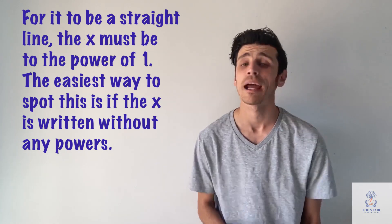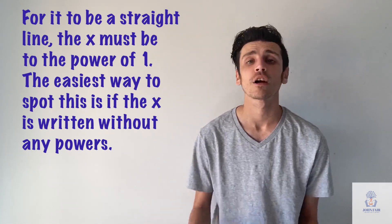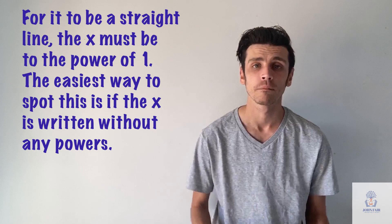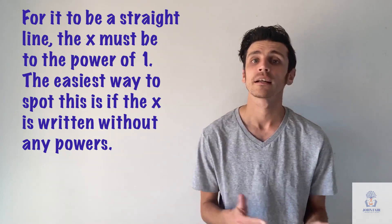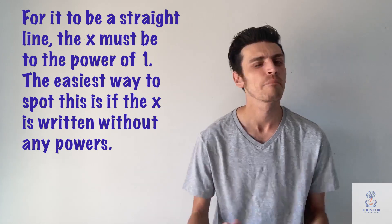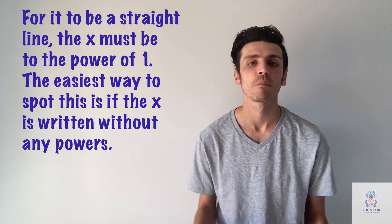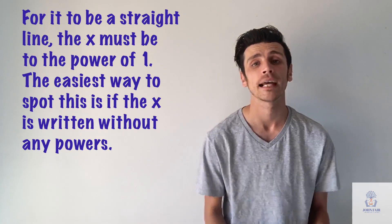Now if it's doing anything else to the x, so if it's 1 divided by x for example, or if it's x to the power of 2, that's going to give you a curved line or it's going to do something different. For it to be a straight line the x has to be to the power of 1, and in math when it's something to the power of 1 we don't bother putting a 1 there, so it just has to look like a normal x.